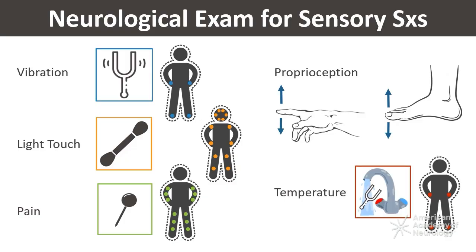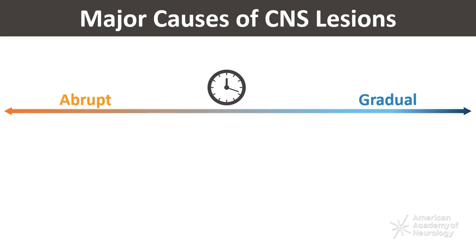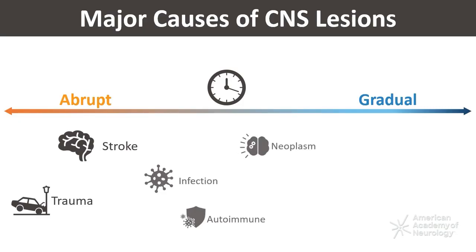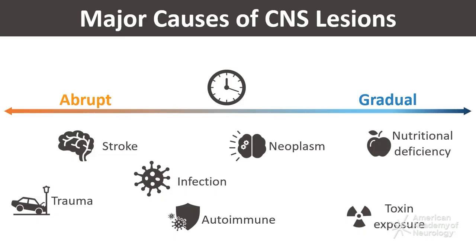Once you have localized the lesion, it's important to consider the etiology. The cause of sensory loss depends on the location of the lesion and on the severity of the presentation. Syndromes like stroke and trauma have an abrupt onset, while infection and autoimmune disorders tend to develop more slowly. Nutritional deficiencies, environmental toxin exposures, and neoplasms often have a more gradual onset.